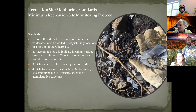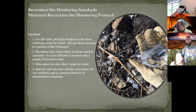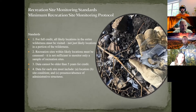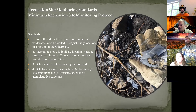For full credit, all likely locations in the entire wilderness must be visited — not just locations in a portion. Partial credit can however be received. All rec sites must be monitored, not just a portion. Data cannot be older than five years. You may opt to collect all data within one year, or spread it out over a five-year span, collecting 20% of data each year until complete, then starting over every five years. Data collection must include location, site condition, and number of administrative structures within the site.